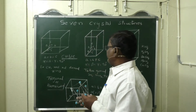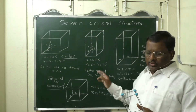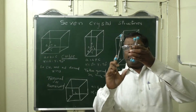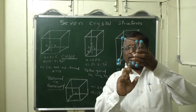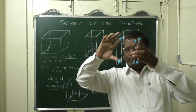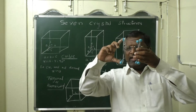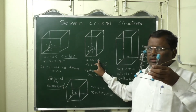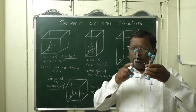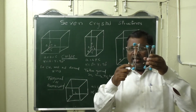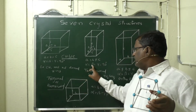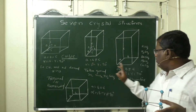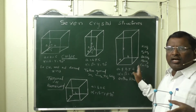The next unit cell is the tetragonal unit cell. In a tetragonal unit cell, the length and breadth are the same — a = b — but the height is different, so a = b ≠ c. However, all angles remain 90 degrees: alpha = beta = gamma = 90°. Remember, for the first three structures — cubic, tetragonal, orthorhombic — alpha, beta, and gamma are all 90 degrees.